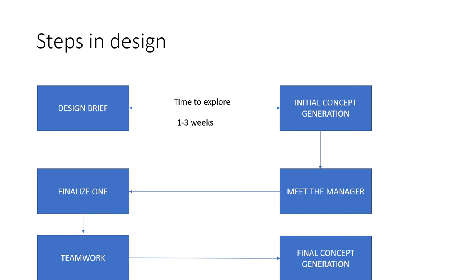Steps in the design process include design briefing where the problem is described. After that, one to three weeks time is given to explore. During this time, the designer searches for inspiration. After that, initial concept generation is done based upon the inspiration.